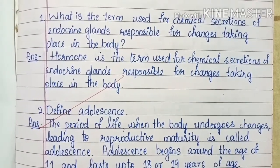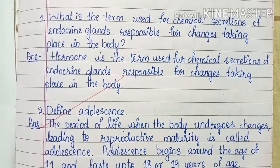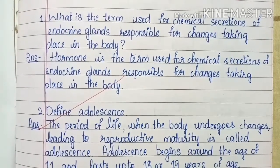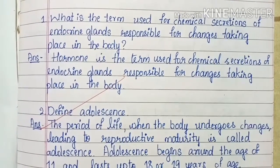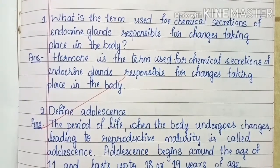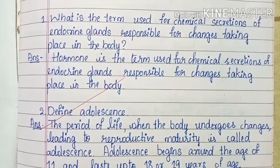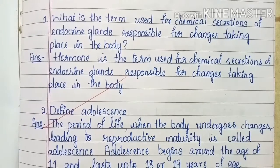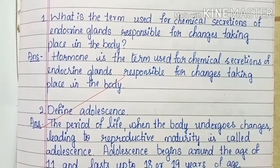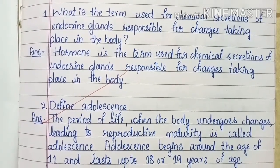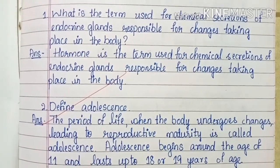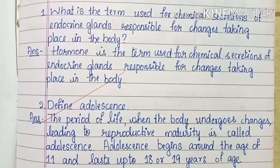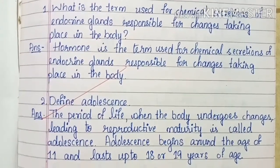Define adolescence. The period of life when the body undergoes changes leading to reproductive maturity is called adolescence. Adolescence begins around the age of 11 and lasts up to 18 or 19 years of age.